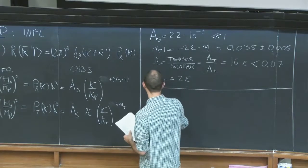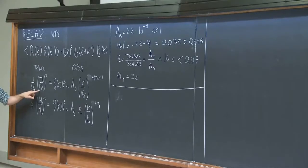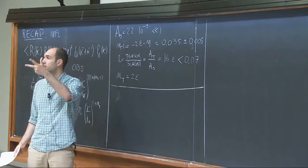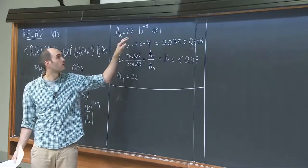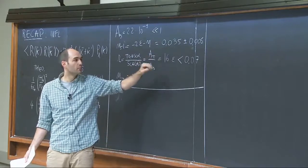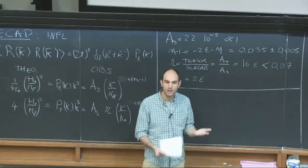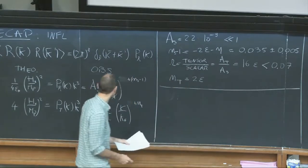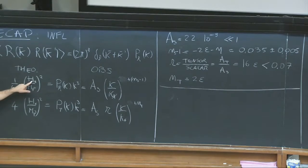How many unknowns are there? There is Hubble, epsilon, and eta — three numbers we don't know. But we only measure two hard numbers: the amplitude and the tilt. Since the amplitude measures H divided by epsilon, and we don't know how small epsilon is, we don't know how big H is. The scale at which inflation took place is uncertain by at least 10 orders of magnitude — perhaps one of the most uncertain scales in physics.